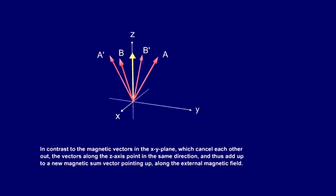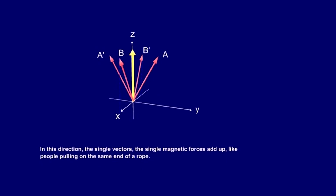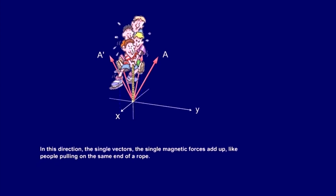In contrast to the magnetic vectors in the XY-plane, which cancel each other out, the vectors along the Z-axis point in the same direction and thus add up to a new magnetic sum vector pointing up along the external magnetic field. In this direction, the single vectors — the single magnetic forces — add up, like people pulling on the same end of a rope.